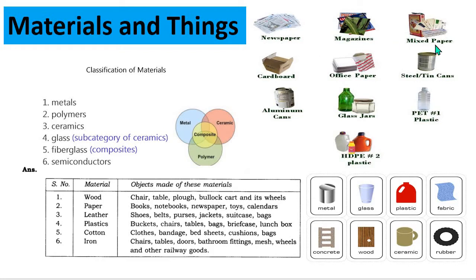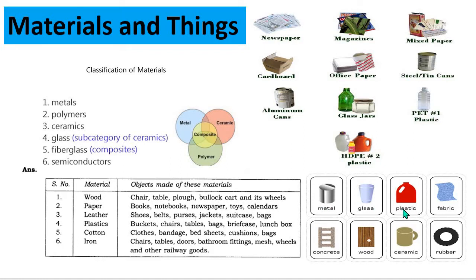In papers we have different types like newspaper, magazine paper, mixed paper, cardboard paper, and office paper. In metals we have steel, tin, tin cans, and aluminium cans. In glasses we have glass jars, and in plastics we have PET plastics and HDPE plastics. This can is made up of metal, glass is made up of glass, and other products are made up of plastic, fabric, concrete, wood, ceramic, and rubber.